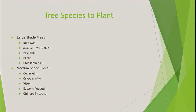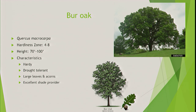Tree species to plant — these are my favorites that do well and we've had great survival with. Bur oak: hardiness zone four to eight, can grow 70 to 100 feet tall and 60 to 80 feet wide, very cold hardy, very drought tolerant, large leaves and acorns, a great shade provider. Just don't plant them over roadways or parking areas — I've seen a lot of car damage from those large acorns.